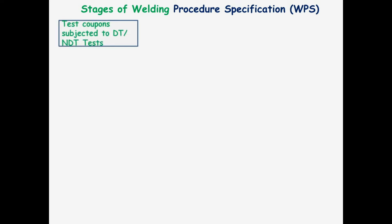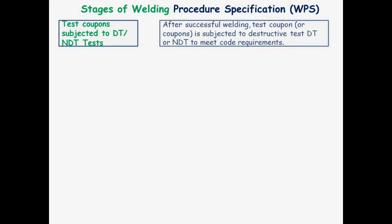Continuing the stages of Welding Procedure Specification, WPS. The test coupons are subjected to DT or NDT tests. After successful welding, the test coupon or coupons are subjected to destructive test (DT) or non-destructive test (NDT) to meet code requirements.